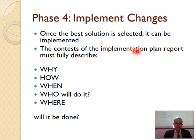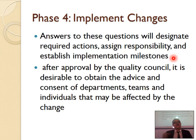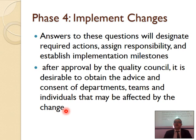The contents of the implementation plan report must be fully described: why, who, when, how, where, and will it be done. Phase four is where you implement the changes. Your answers to these questions will designate required action, assign responsibility, and establish implementation milestones. For example, phase one: start reservations online with an email sent. Phase two: reservations by SMS. Phase four: a mobile application for reservations. After approval of the Quality Council, it is desirable to obtain the advice and consent of the department's team and individuals that may be affected by the change. The people in the reservation department, management, and sales team all need to be aware and buy into the implementation.